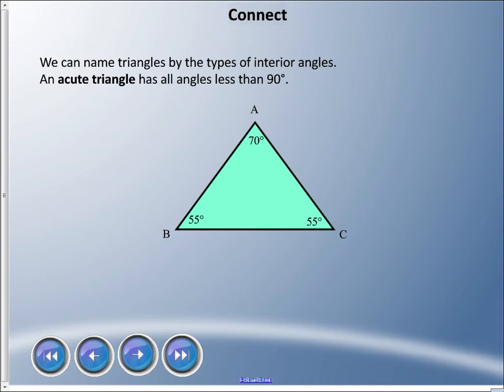We can name triangles by their angles. The first one here is an acute triangle, and it's called an acute triangle because all the angles in the triangle are less than 90 degrees. We know all angles below 90 degrees between 0 and 90 are acute angles, so if all three angles in a triangle are acute angles we call it an acute triangle.